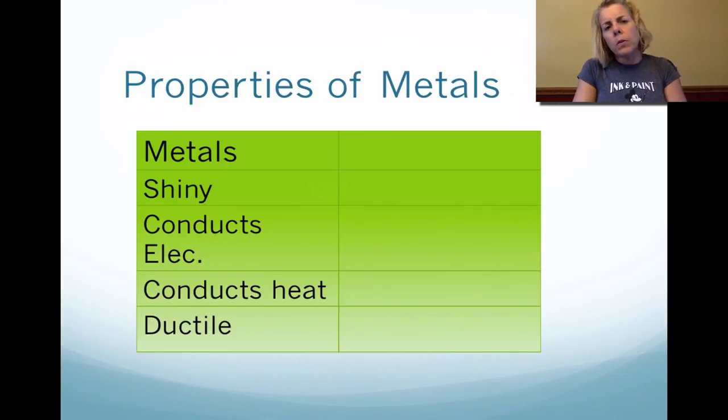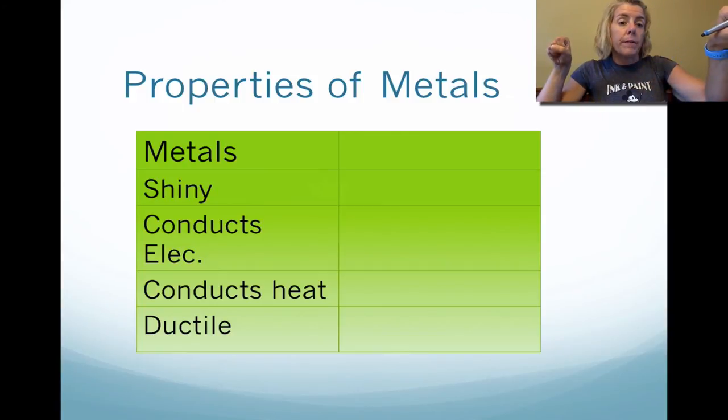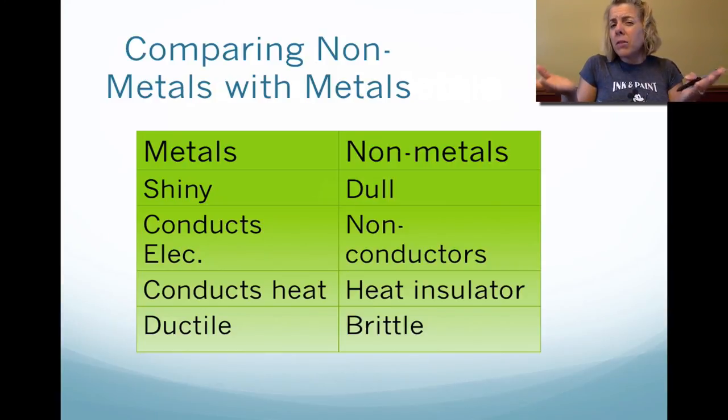This is kind of a review for you. You know that metals are shiny, conduct electricity and heat, and are ductile, which means you can pull them into a wire. Non-metals are much more different. They tend to be dull, so they don't have a nice shiny surface. They do not conduct electricity or heat, and they tend to be brittle.